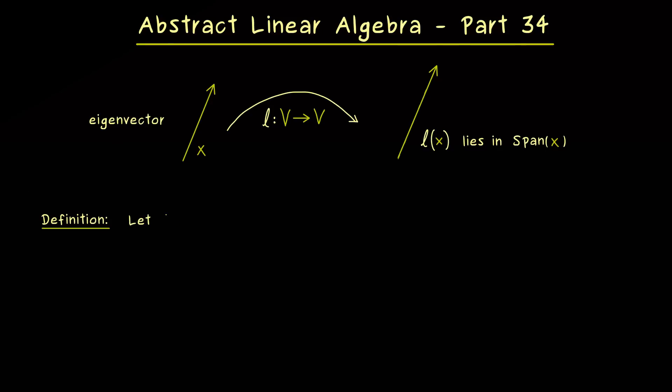Hence, let's fix our general F-vector space V and a general linear map we call l. Now important to note is that everything in the definition here will work for finite dimensional vector spaces, but also for infinite dimensional spaces. This is simply because we don't need any matrix representation to define eigenvectors and eigenvalues.